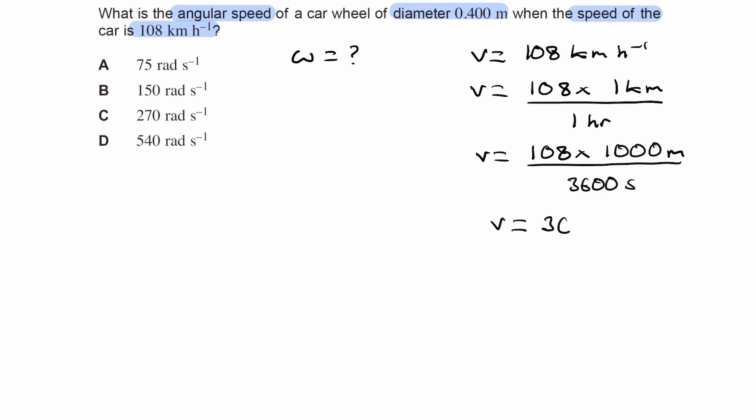That gives us 30, so the speed is 30 meters per second. And then we know that the diameter of the circle is 0.4, so the radius of the circle would be 0.2.